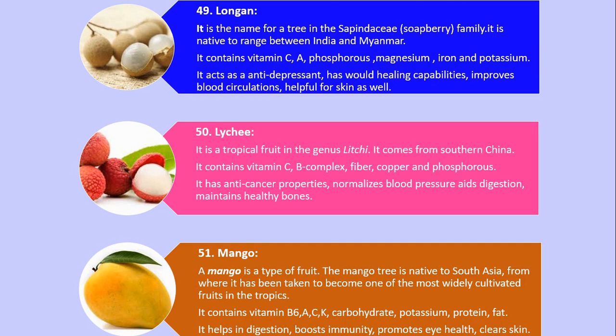Number 50. Lychee. It is a tropical fruit in the genus Litchi. It comes from southern China. It contains vitamin C, B complex, fiber, copper and phosphorus. It has anti-cancer properties, normalizes blood pressure, aids digestion, and maintains healthy bones.